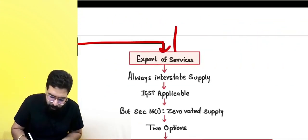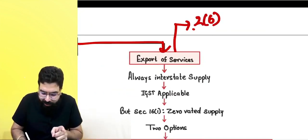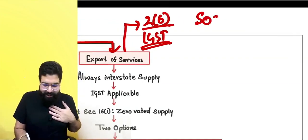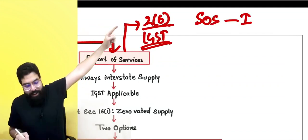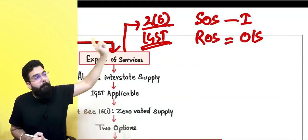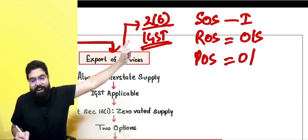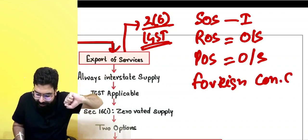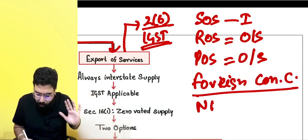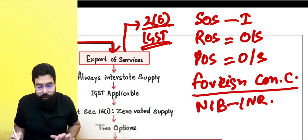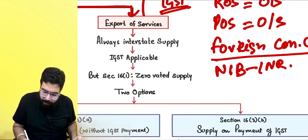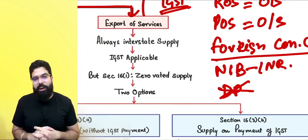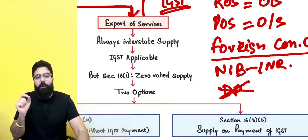Export of service is defined under Section 2(6) of the IGST Act. It means: the supplier of services is in India, the recipient of service is outside India, the place of supply is outside India, and the payment is received in foreign convertible currency. In case of Nepal and Bhutan, Indian Rupees is also allowed. Additionally, both parties should not be mere establishments of a distinct person — not just a head office and branch office relationship.